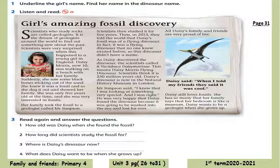Daisy's dinosaur is now in the Natural History Museum in London. Mr. Simpson said, 'I knew that I was looking at something very special, and I was right.' He was very happy that Daisy found the dinosaur because it was going to be washed into the sea and lost forever. All Daisy's family and friends are very proud of her. Daisy said, 'When I told my friends, they said it was cool.' Daisy still loves fossils — she has so many that her family says her bedroom is like a museum. Daisy wants to be a geologist when she grows up.